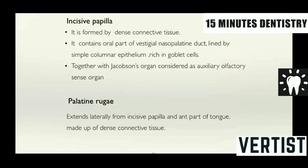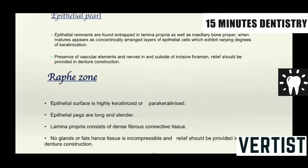The incisive papilla is formed by dense connective tissue and contains the oral part of the nasopalatine duct, lined by simple columnar epithelium. Together with the Jacobson's organ it is considered an auxiliary olfactory sense organ. The palatine rugae are very important for identification of individuals — different rugae patterns can be seen and the study of this is called rugoscopy. It extends laterally from the incisive papilla and is made up of dense connective tissue. The raphe zone is highly keratinized with long slender pegs and lamina propria consisting of dense fibrous connective tissue.